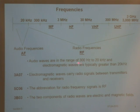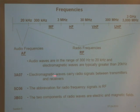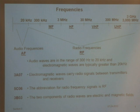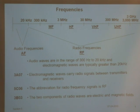Audio waves are in the range of about 300 to 20,000 hertz. Electromagnetic waves are higher — they carry radio signals between transmitter and receiver. An electromagnetic wave leaves my transmitter, goes to your radio, and your radio receives it. That's true whether it's a regular radio, an AM station, a TV station, or an FM station. The abbreviation for radio frequency signals is RF. The two components of radio waves are electric and magnetic fields.